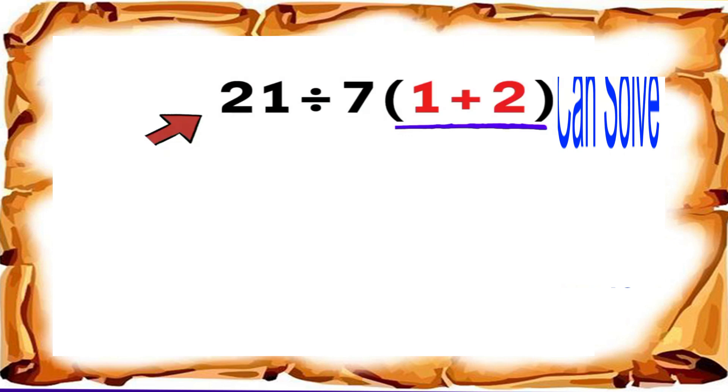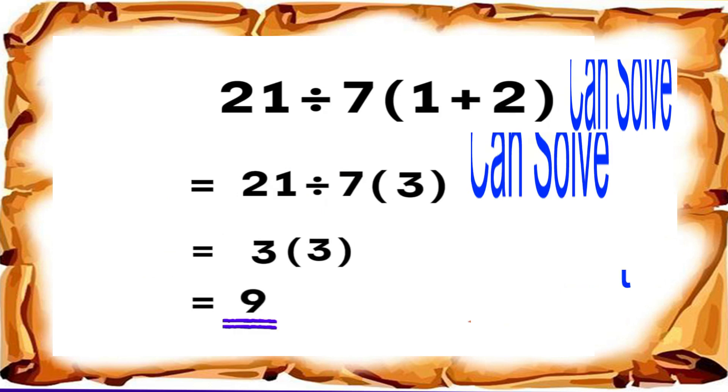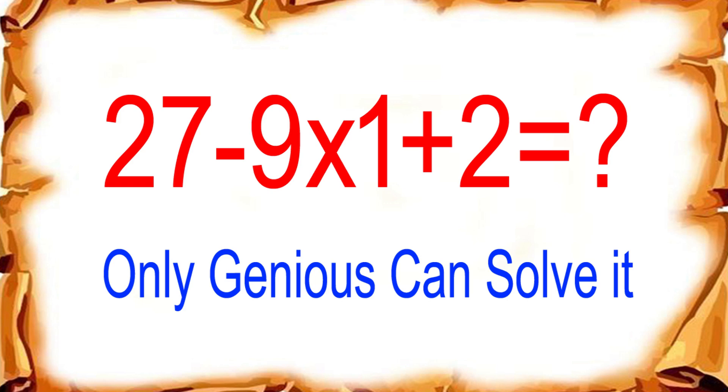One plus two equals three. Now the expression becomes 21÷7×3. Next, we handle multiplication and division from left to right. 21 divided by 7 equals 3. Then 3 times 3 equals 9. And that gives us our correct final answer: 9.